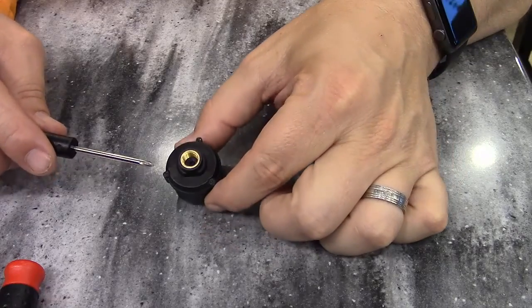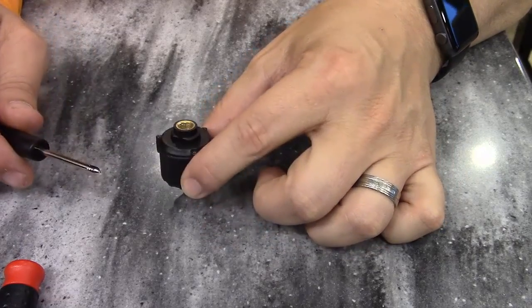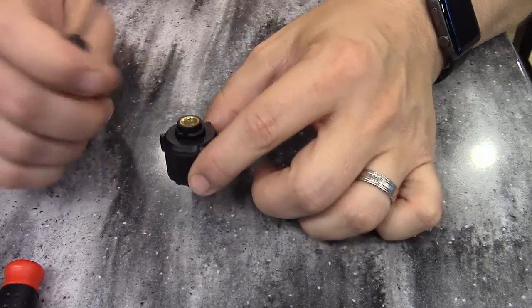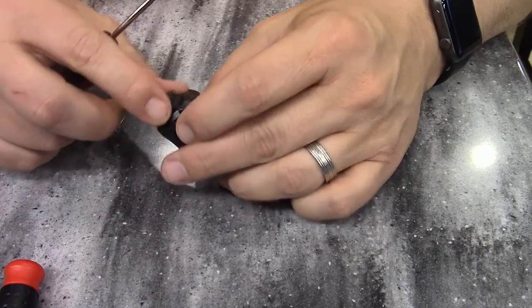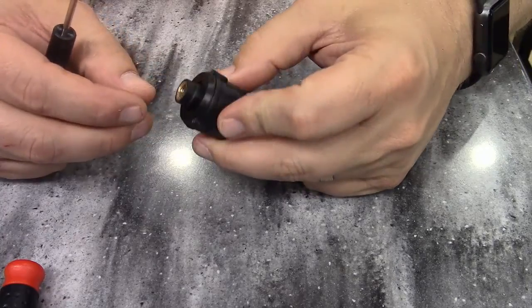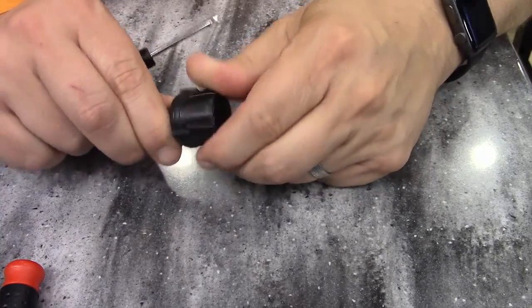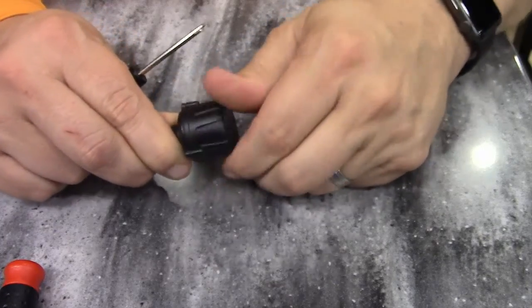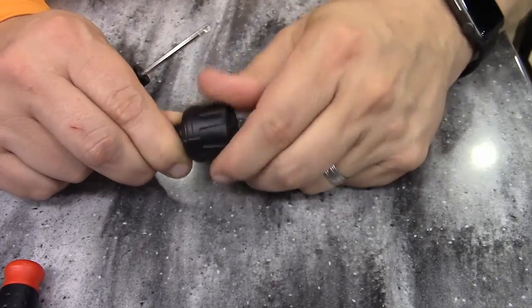You'll notice there's three tiny Phillips head screws here, so you'll need a tiny Phillips head screwdriver to get those out. Keep in mind, when we take those out, what we're going to be doing is just taking this outer shell off. The outer shell is actually the anti-theft device, so when this is on a valve stem, if somebody tried to take it off, it would just spin.